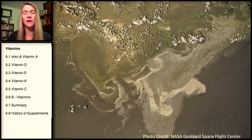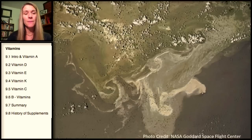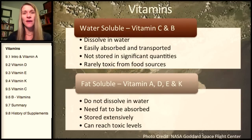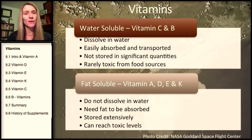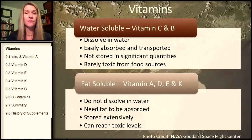Of course, we learned about lipids that act as emulsifiers, such as lecithin, that can help bind and bring those into solution. Now, vitamin C and all the B vitamins are water-soluble, meaning they're going to dissolve in water, so they're easily absorbed and transported. The digestive juices are water-based and so is the bloodstream, so it's very easy for them to be absorbed and then transported throughout the body.